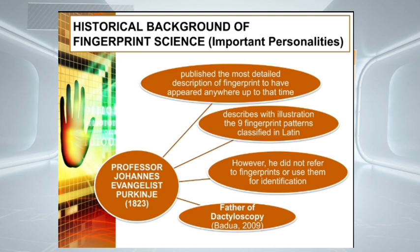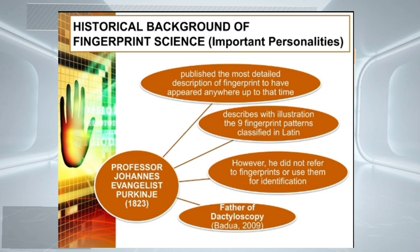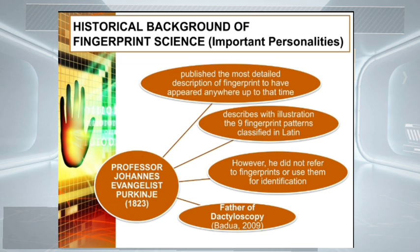Next is Professor Johans Evangelist Purkinje in 1823, a professor of anatomy at the University of Breslau, Germany. He published the most detailed description of fingerprints to have appeared anywhere up to that time. He published a thesis in Latin, which is a commentary on the physiological examination of the organs of vision and the cutaneous system. He described with illustration the nine fingerprint patterns classified in Latin. However, he did not refer to fingerprints or use them for identification. He is considered the father of dactyloscopy.